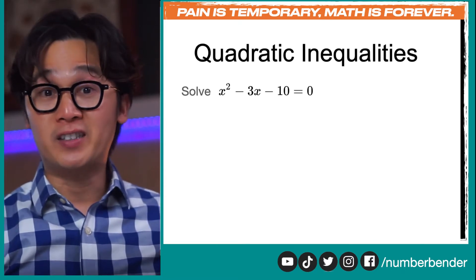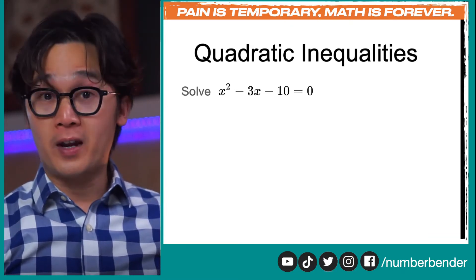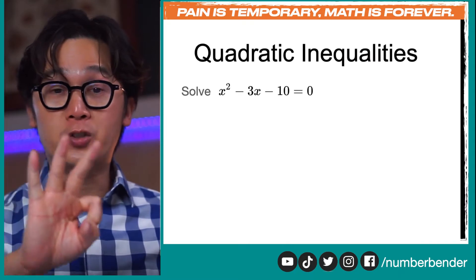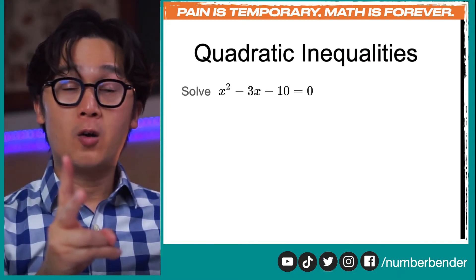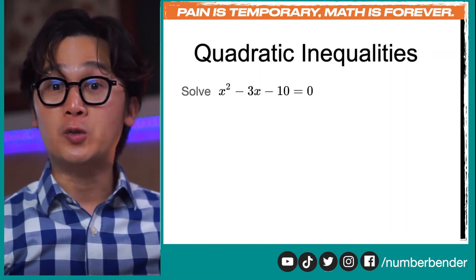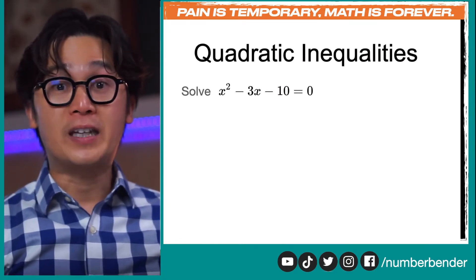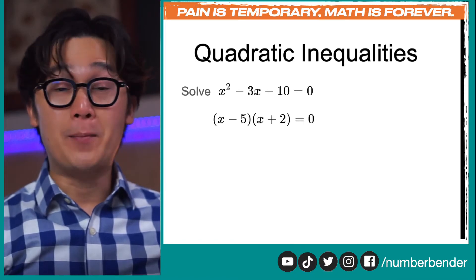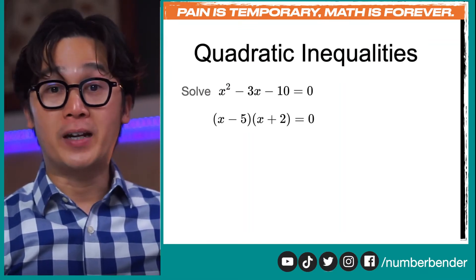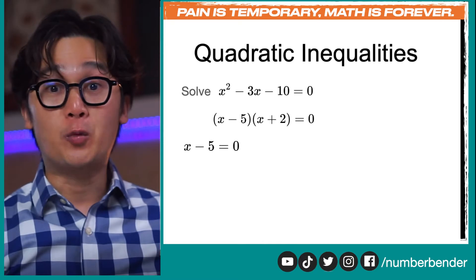Let's solve x squared minus 3x minus 10 equals 0 as a review of solving quadratic equations. We have three methods: factoring, completing the square, or the quadratic formula. In this case, we can factor it — we need factors of negative 10 that add up to negative 3, which are negative 5 and positive 2. Using the zero product property, we equate each factor to 0 and solve separately.